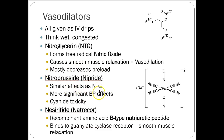Nesiritide, or Natrecor, is a brain natriuretic peptide analog that binds guanylyl cyclase receptor, causing smooth muscle relaxation. It's rarely used and I won't test you on it — just know it exists as a secondary vasodilator. It hasn't been shown to be all that beneficial long-term and is very expensive. Nitroprusside, which used to be relatively affordable, now costs about $2,000 a bag due to manufacturing shortages, so we avoid it when we can.